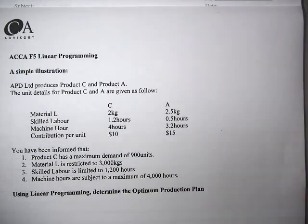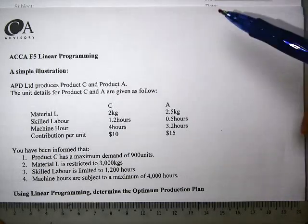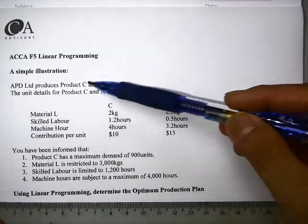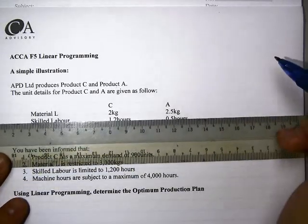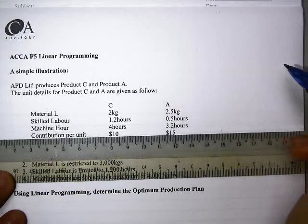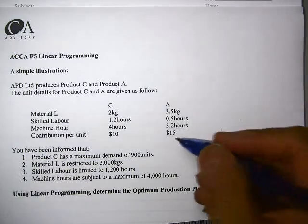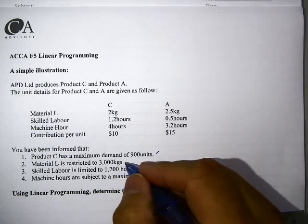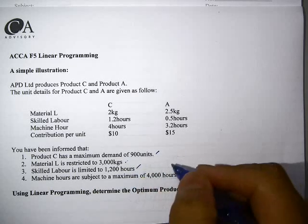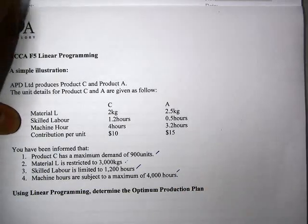So it says here that APD produces Product C and Product A, and we've been given the details for C and A. They tell us Material L, Skilled Labor, Machine Hours, Contribution per unit. You've been informed that C has a maximum demand of 900, L is restricted to 3000 kilos, Skilled Labor is 1200, Machine Hours will be 4000.